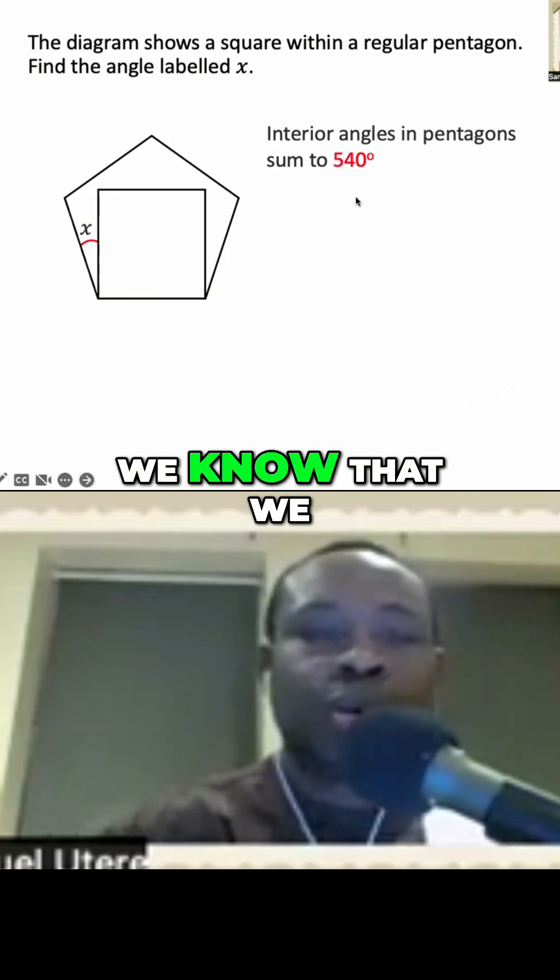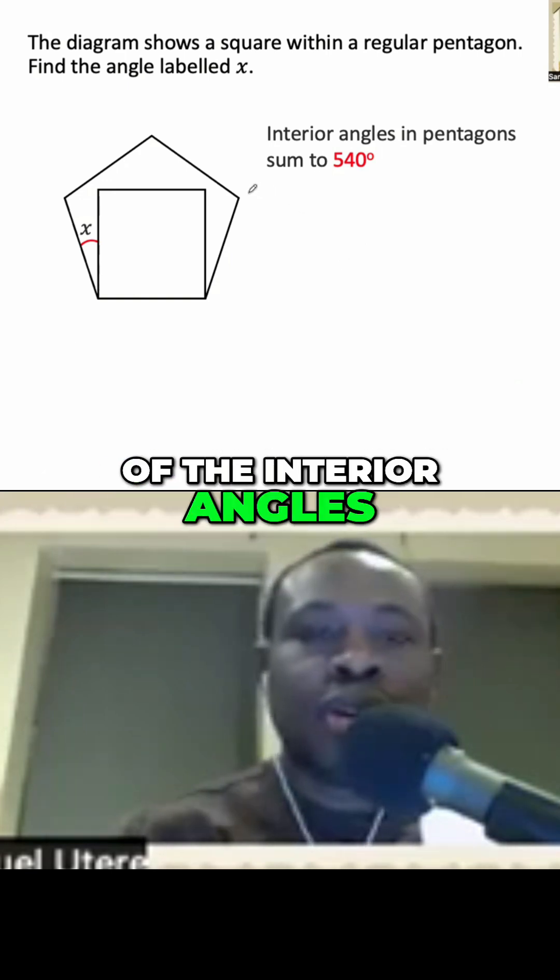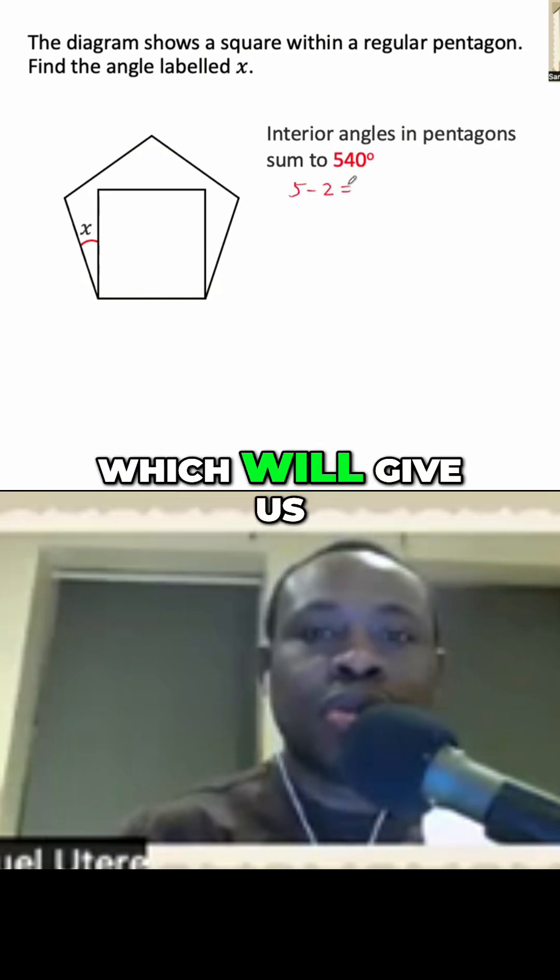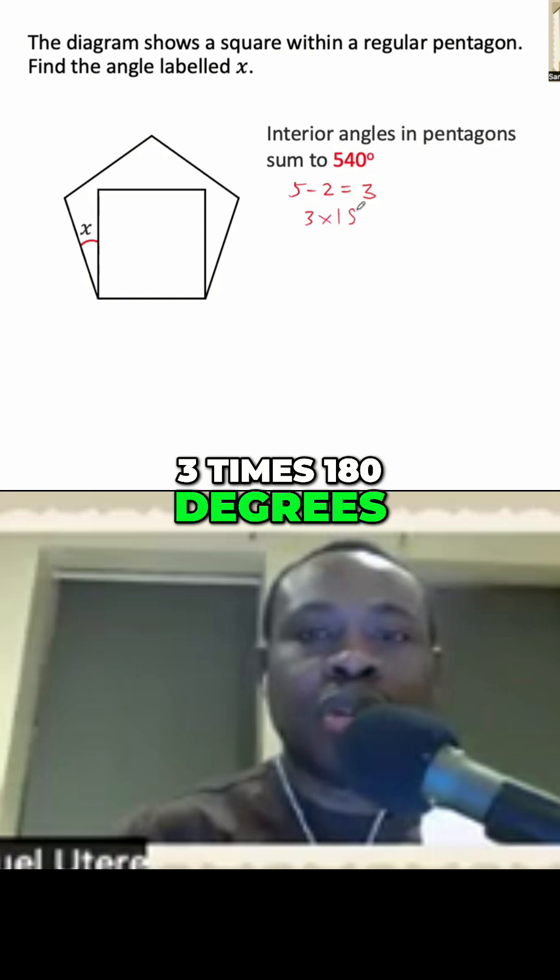We know that we have five sides. So to find the sum of the interior angles, we'll do 5 subtract 2, which will give us the number of triangles we can get from there. And then we'll do 3 times 180 degrees, which is 540 degrees.